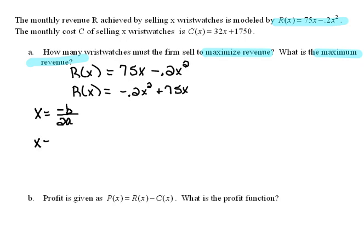So X will equal negative B, our B value here is 75, so that will be negative 75 over 2 times A, which is negative 0.2. So when we simplify that down, we should get 187.5.